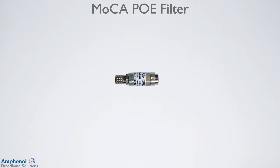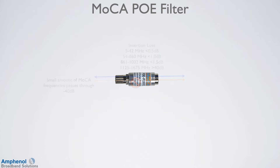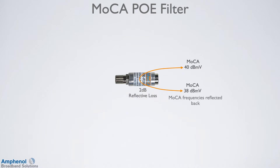Next we'll look at the MOCA point-of-entry filter. The insertion loss at standard cable TV frequencies ranges from 0.5 dB to 1.5 dB. At MOCA frequencies, they typically reduce the signal by 40 dB — typically enough to prevent interference to neighboring MOCA networks. The one big advantage of the MOCA filter is it reflects the MOCA signal back into the MOCA network. The filter has a reflective loss of about 2 dB, so if you had 40 dBmV into the filter, it would lose 2 dB and reflect back into the MOCA network at 38 dBmV.